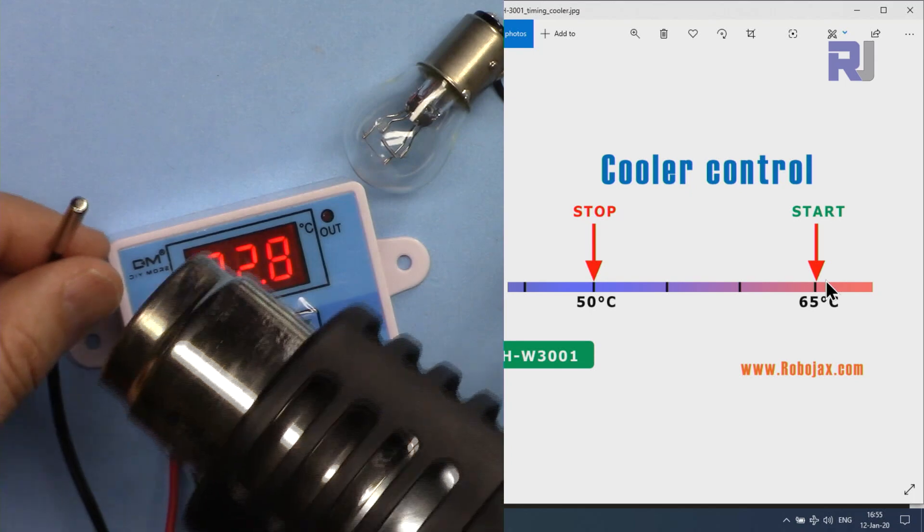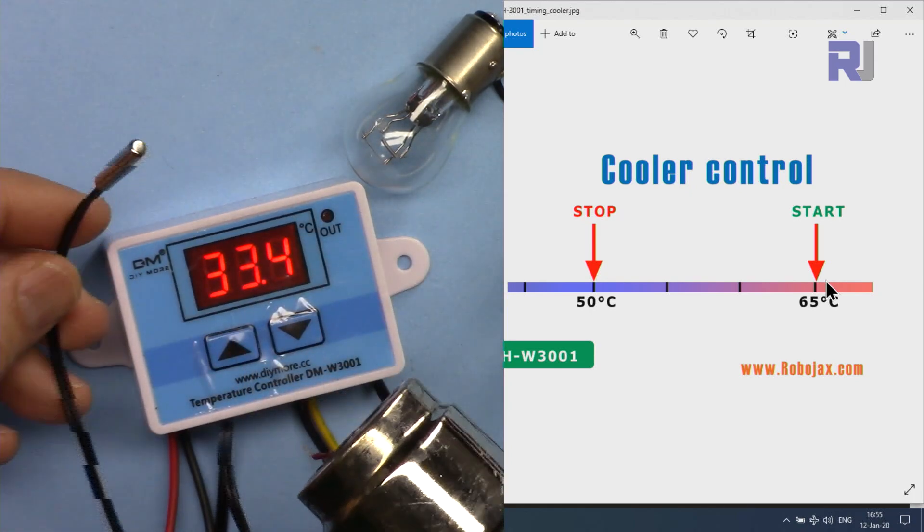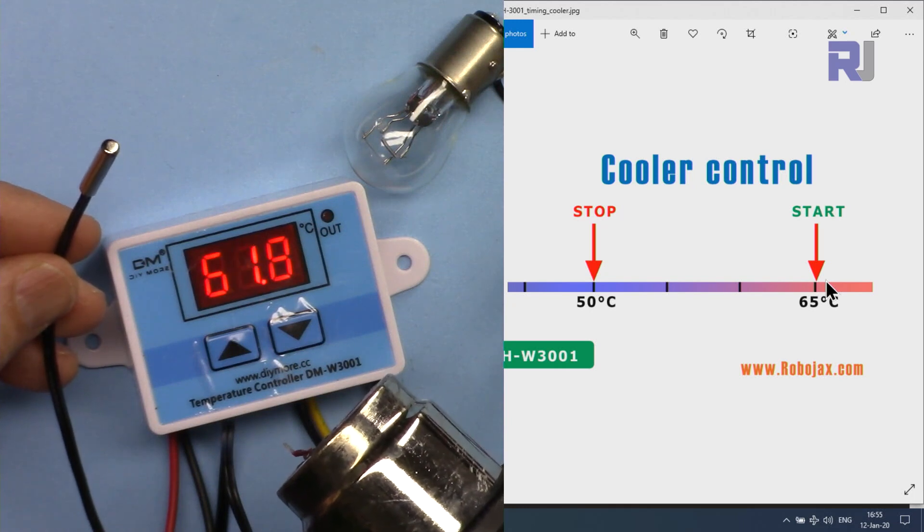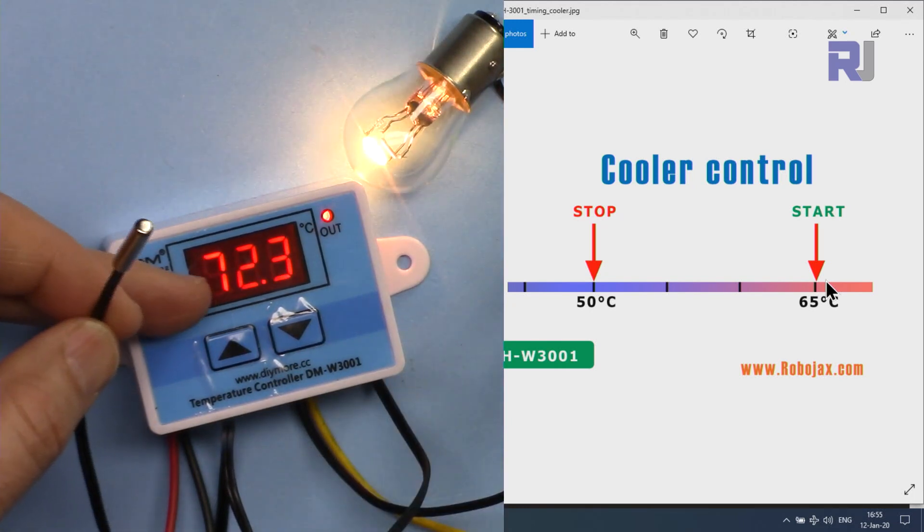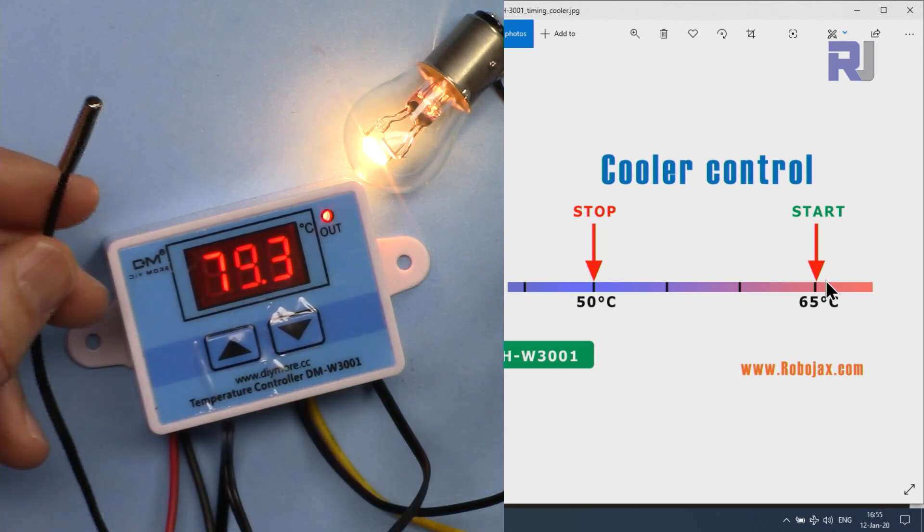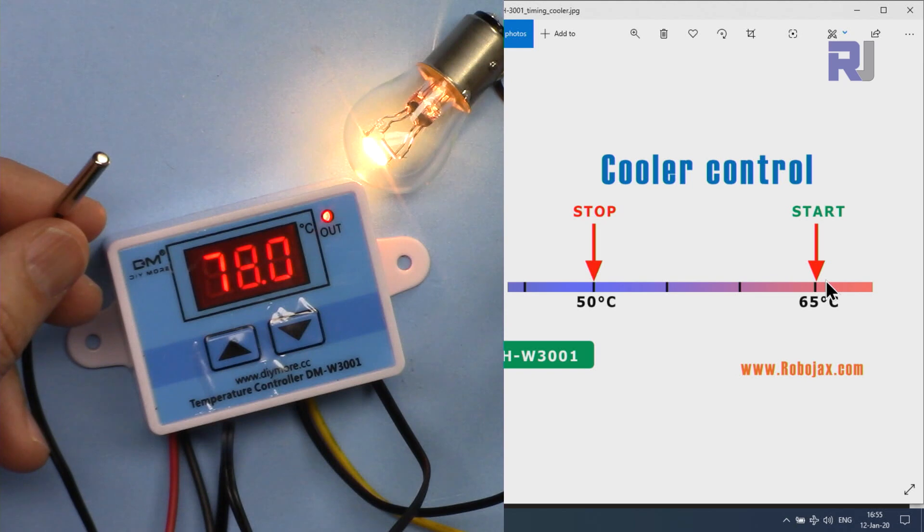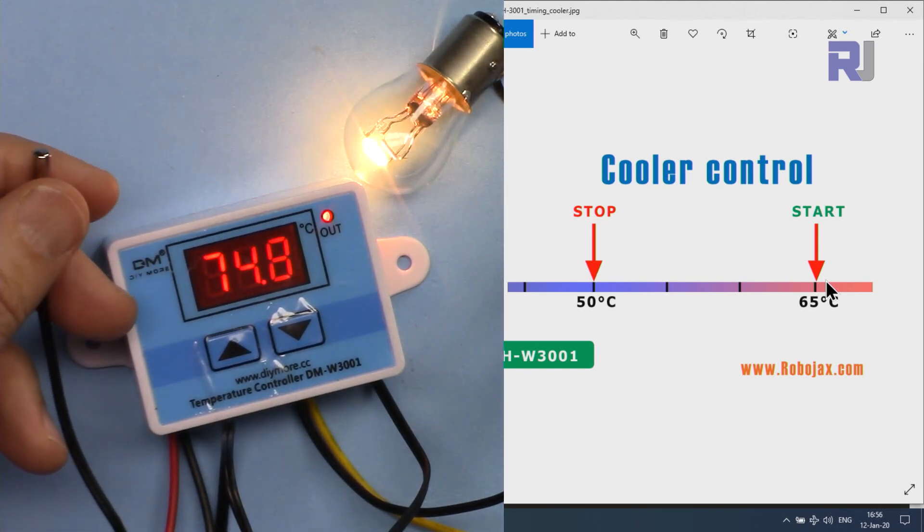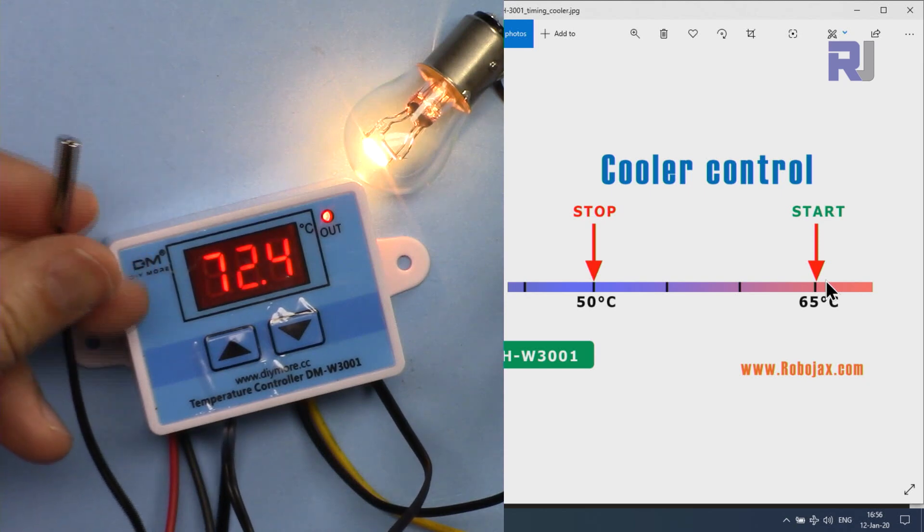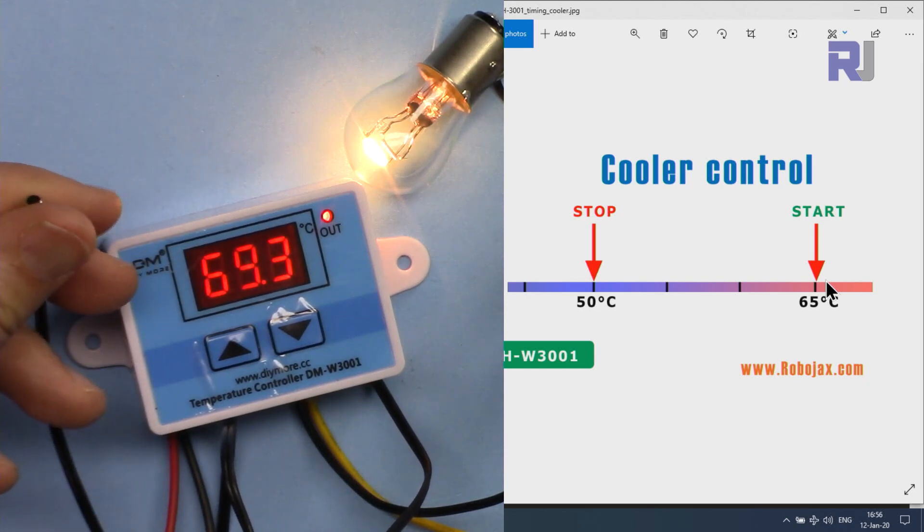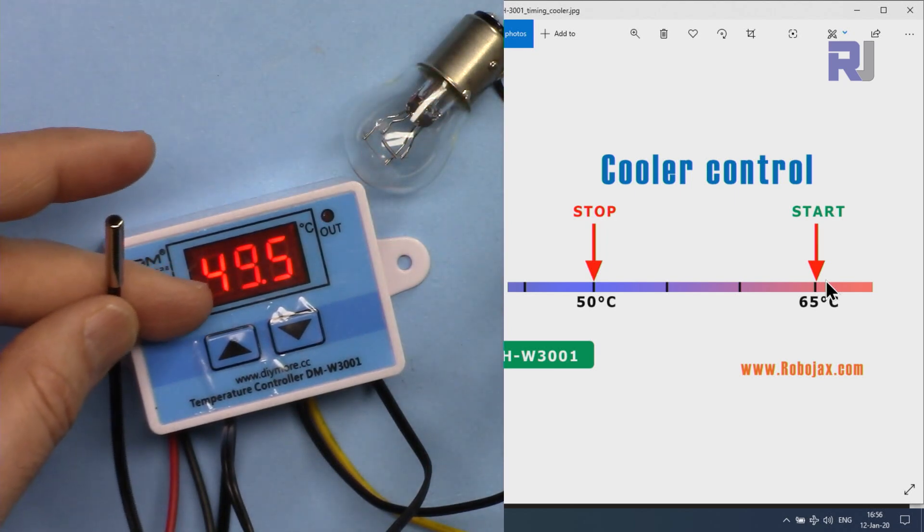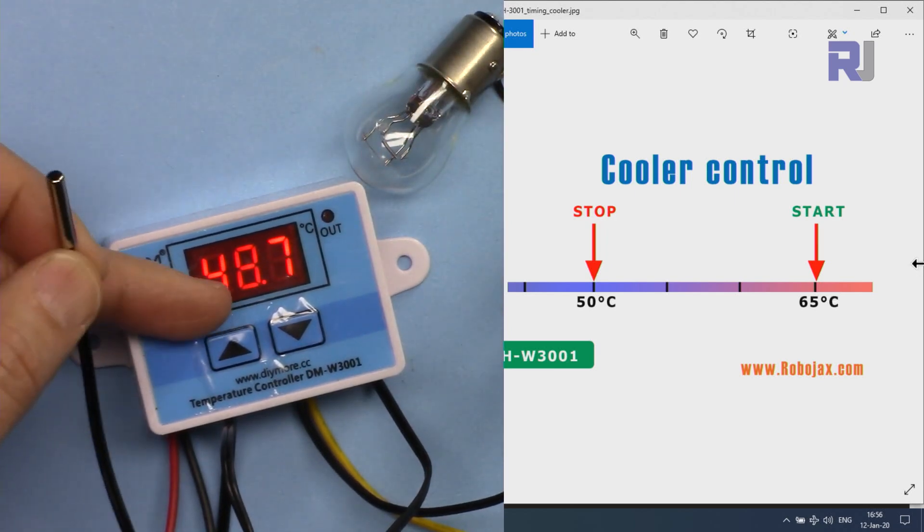I'm applying now heat with my heat gun. So at 65 it started - it's way above the limit. The cooler is now working, it's very hot so I can hold it on my finger to speed it up being reduced faster. Now at 50 it will stop, and this is how you can use this as a cooler.